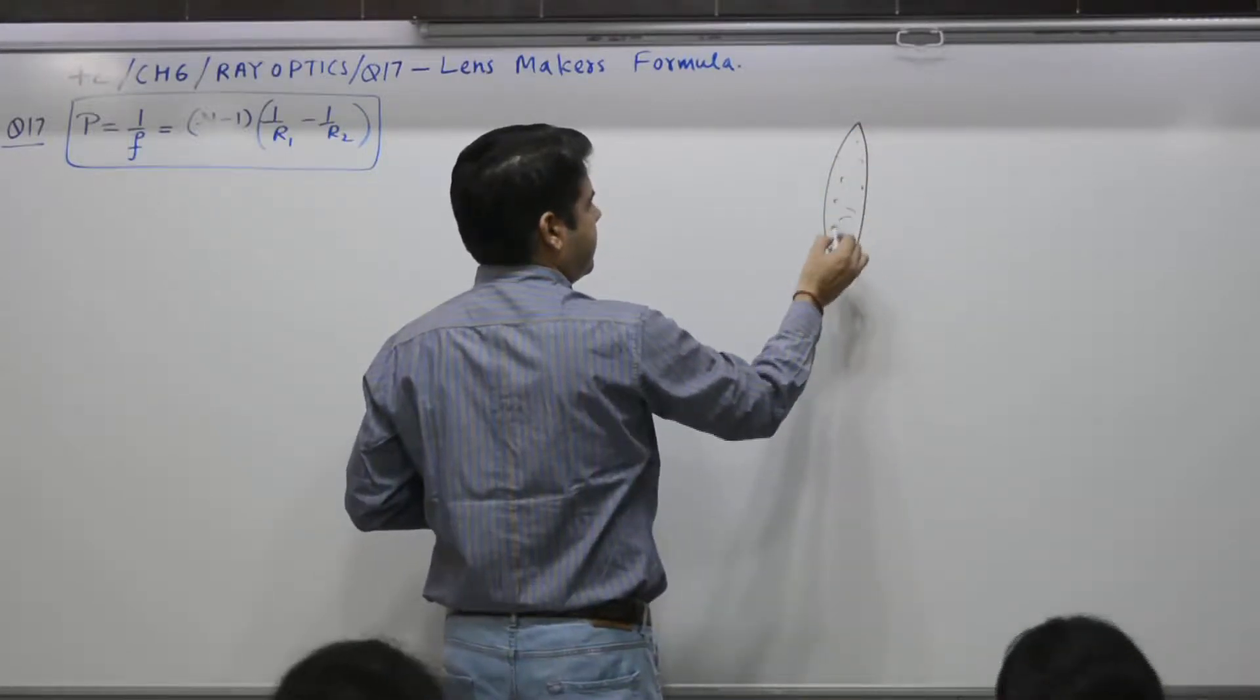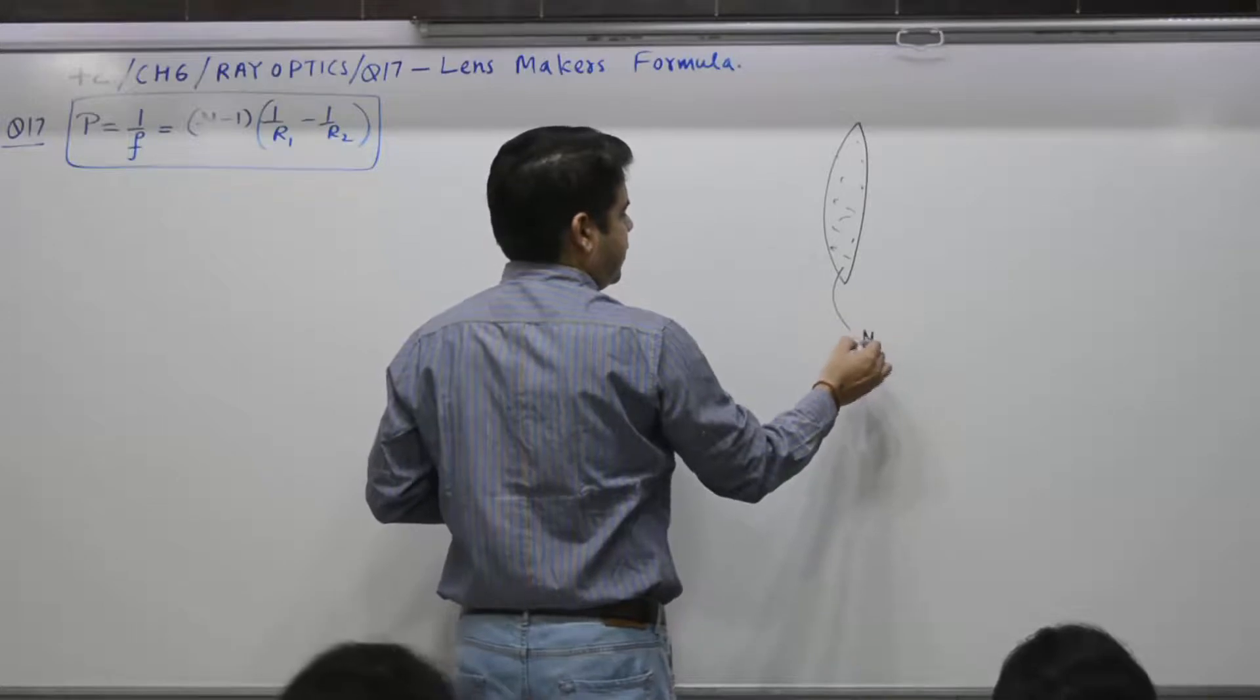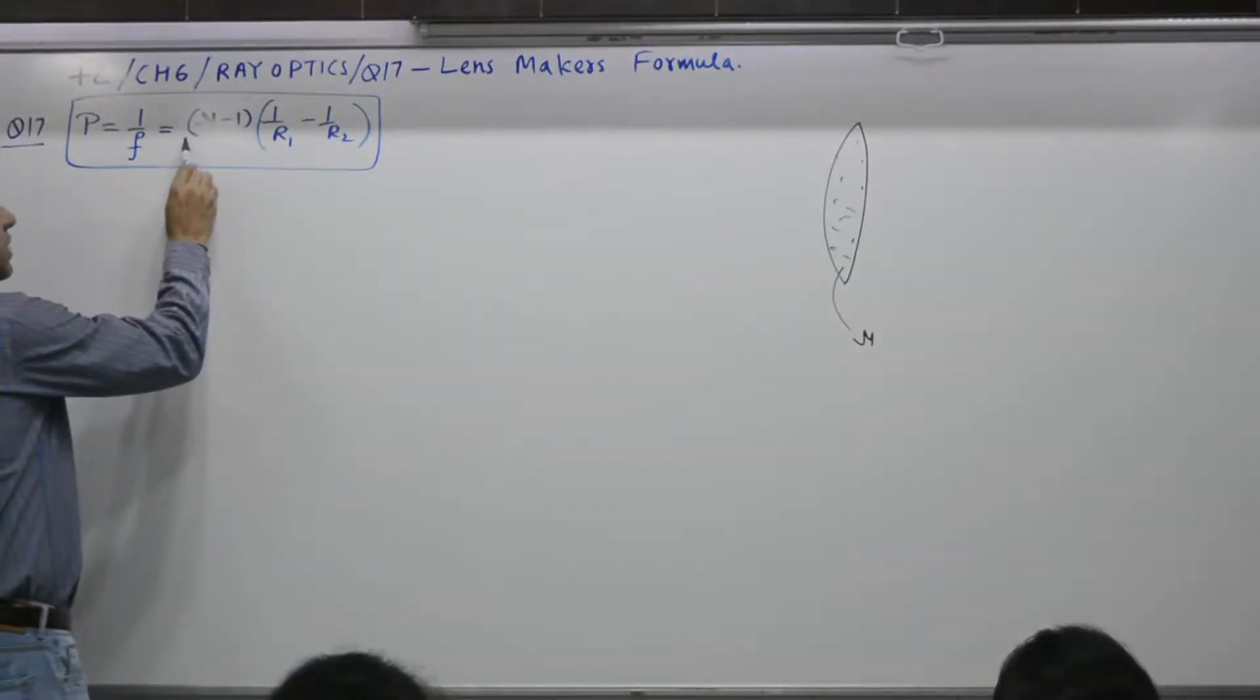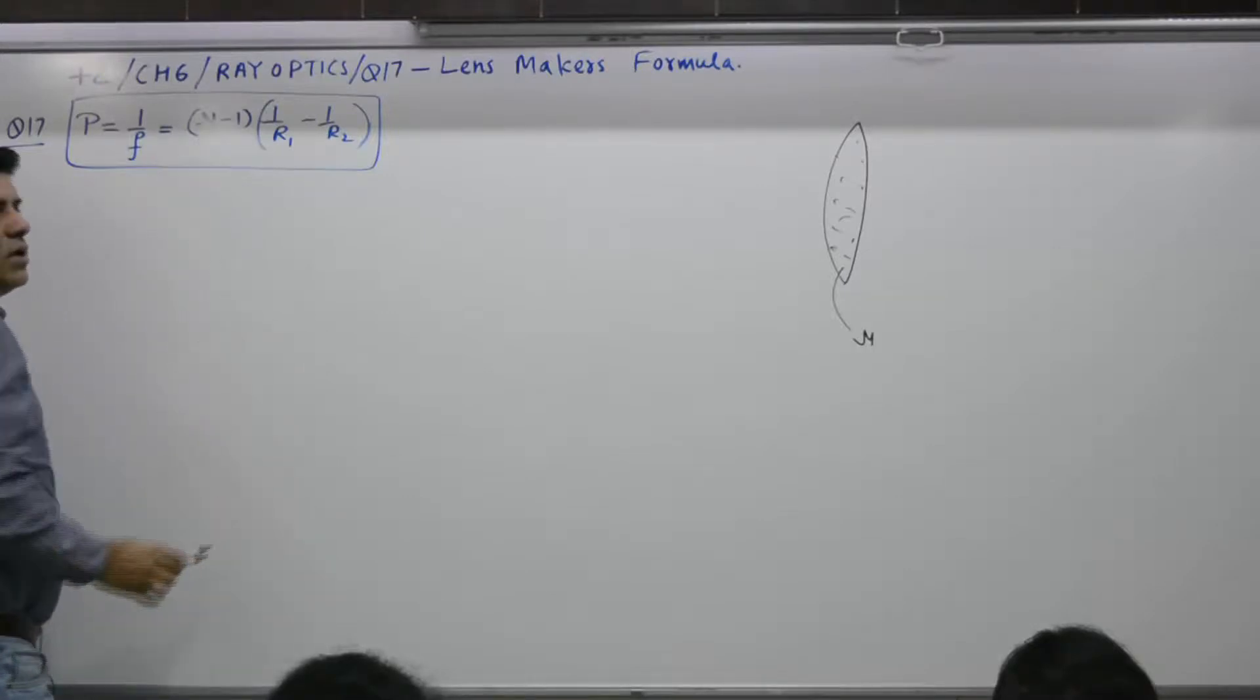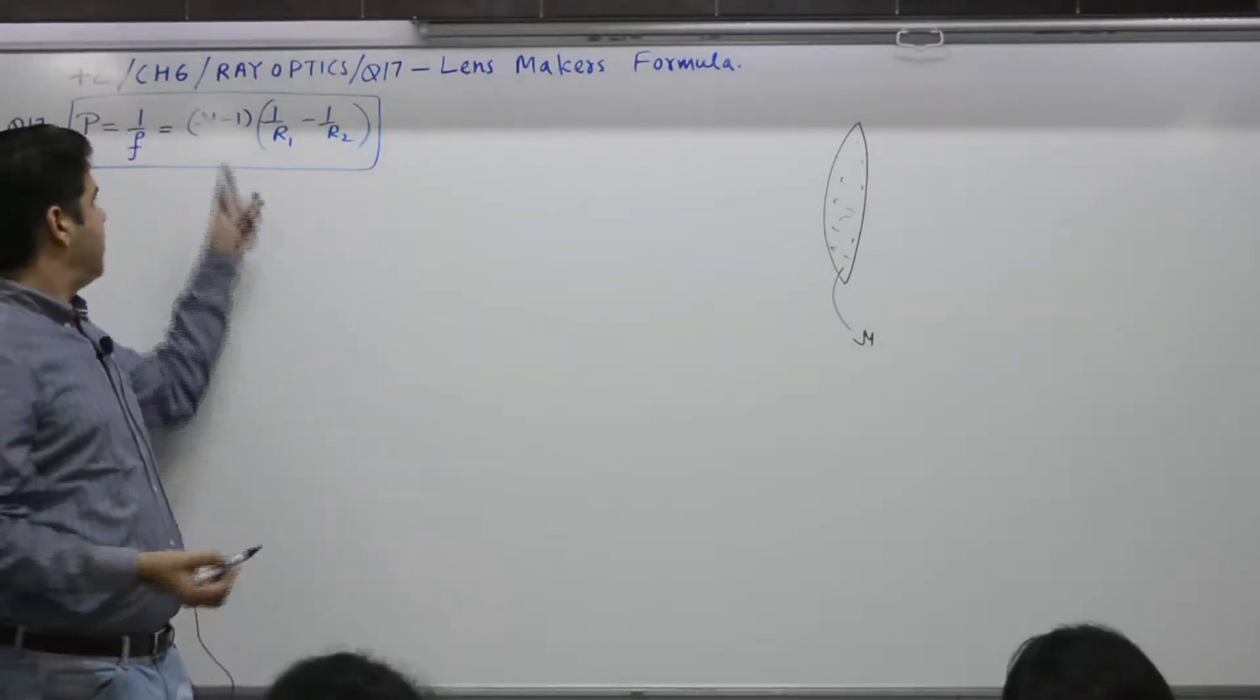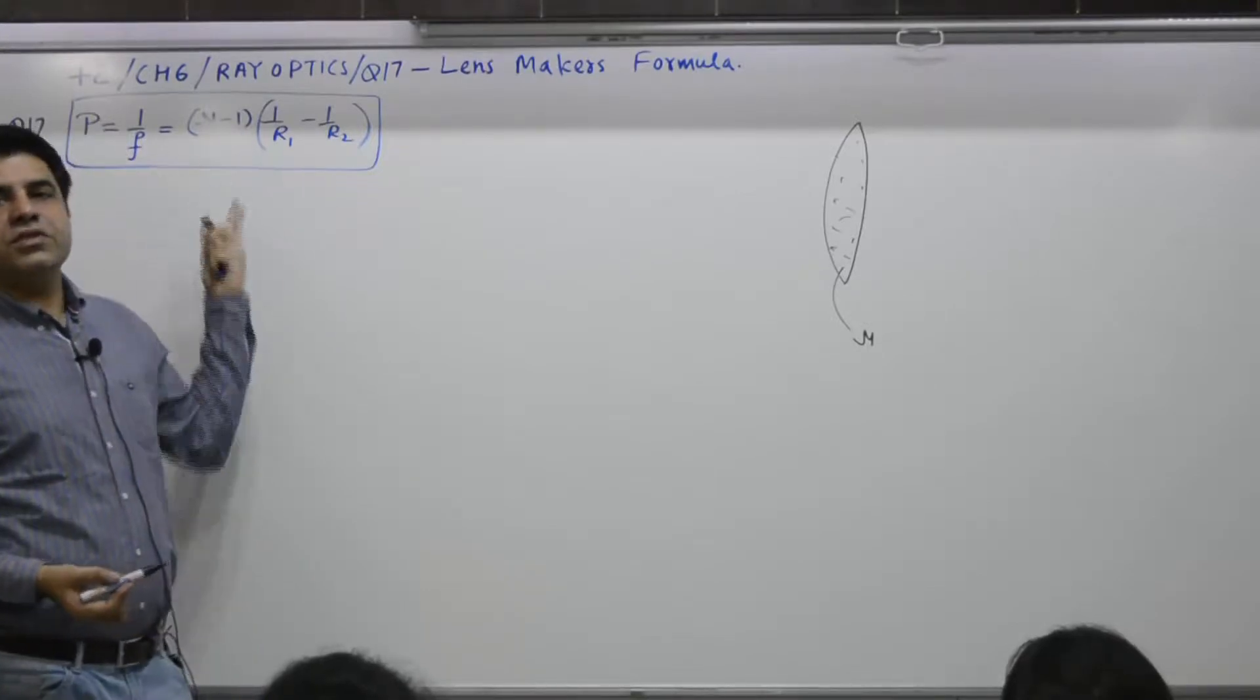There is a material of refractive index nu. So first part is nu. If nu is equal to 1, it is air. It won't act as a lens. 1 minus 1 is 0, power is 0.